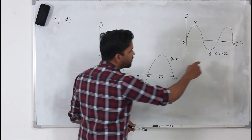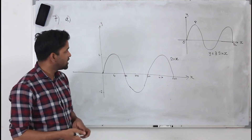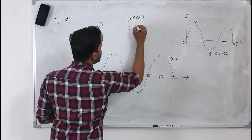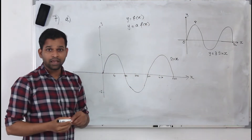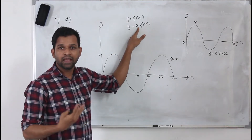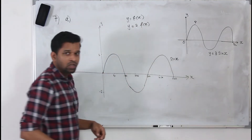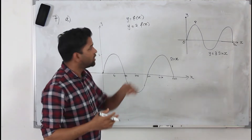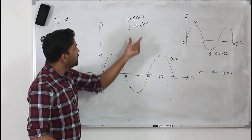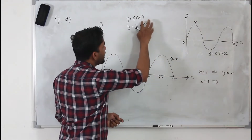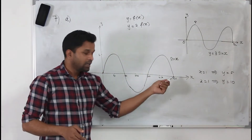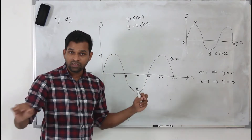Now, if you multiply the function by 3 — in basic transformations, whenever you multiply a function by a constant 'a', giving you a times f of x — your x values remain the same, but your y values will be multiplied by a. For example, if for the normal curve y = f(x), when you substitute x = 1 and the y value is 5, then for a times f(x) the y value becomes 2 times 5, which is 10. So your x-intercepts — where the curve intersects the x-axis — remain the same.